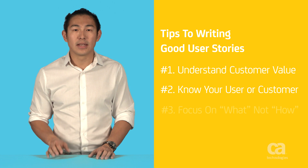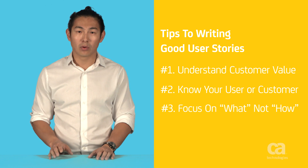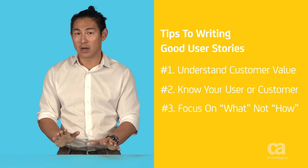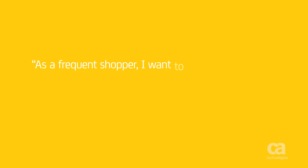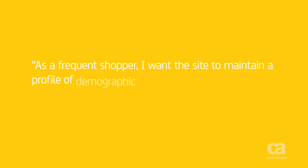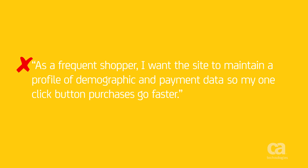User stories, just like traditional requirements, need to focus on the what and not the how. A good user story might be: 'as a frequent shopper, I want to purchase with one click so I can buy without hassle.' This story describes a goal without getting into the implementation details. A bad example is: 'as a frequent shopper, I want the site to maintain a profile of demographic and payment data so my one-click button purchases go faster.' I've now told the developers exactly how to build it — it might not be the best way to provide that value, and my story doesn't leave them any options.